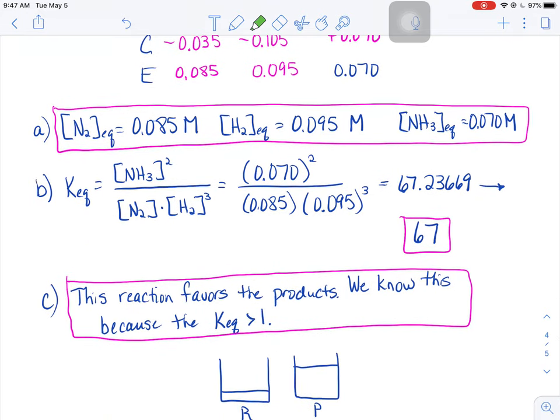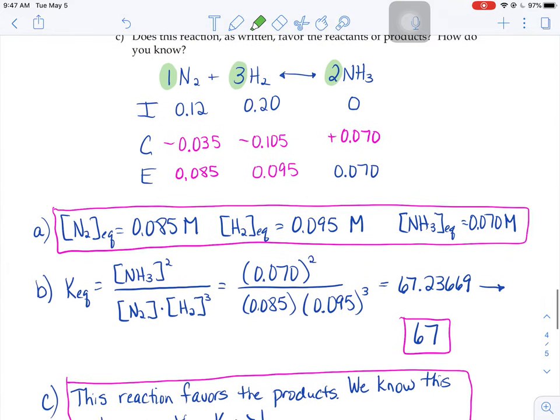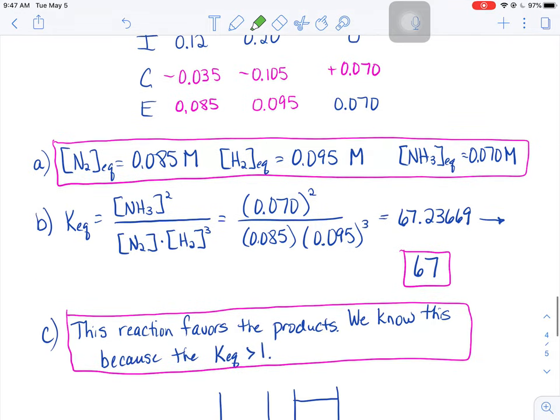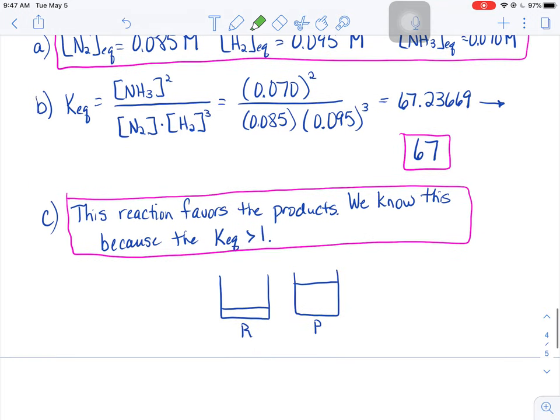That equilibrium expression, the one, the three, and the two, those numbers show up in the change line and in the equilibrium expression. So we have to square the NH3. We have to cube the hydrogen. When you solve, you'd get 67. And this would be a product favored reaction. And you know that that's true because your Keq is greater than one.